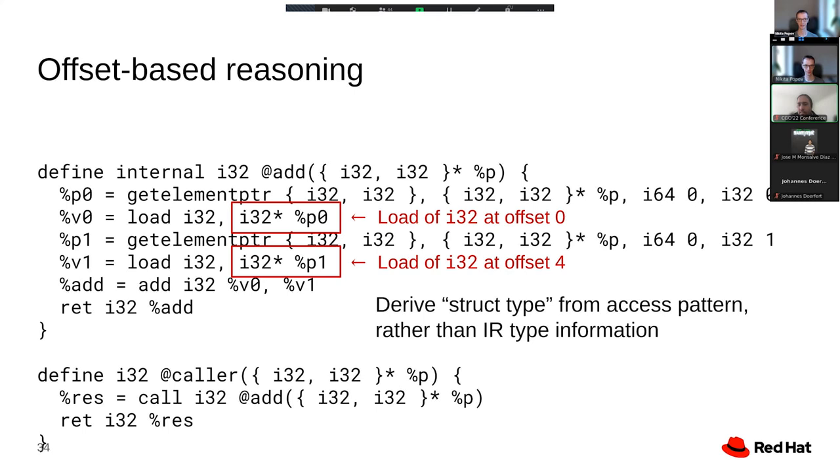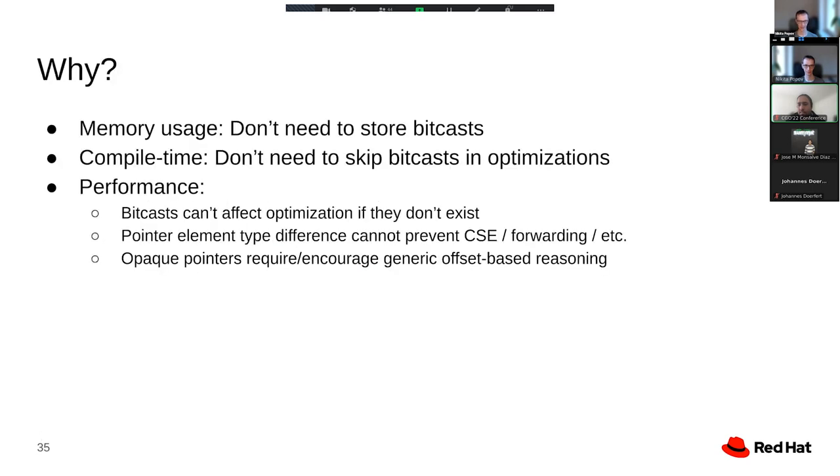Which means that even if the type information that has been encoded is incorrect, for example, because the function accepts on the C level a void pointer, so an i8 pointer and then gets bit cast to something else, that would still be supported. As said before, this is not strictly speaking a benefit of opaque pointers, it's more that the opaque pointers migration has forced us to actually rewrite optimization passes to work in this way.